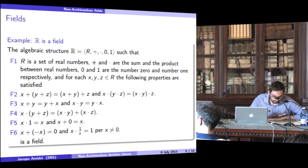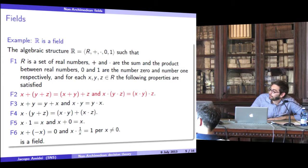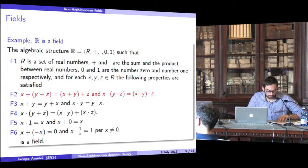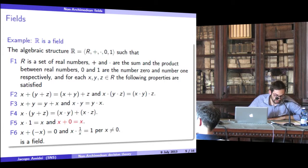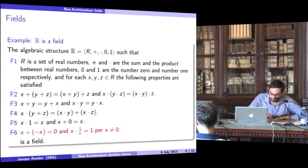In fact, sum and product between real numbers are both associative and commutative. The product distributes over the sum. One is the identity element for product, zero is the identity element for sum, and every real number different from zero has a product inverse, and every real number has a sum inverse.